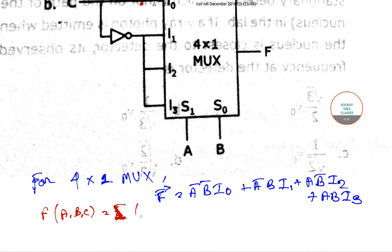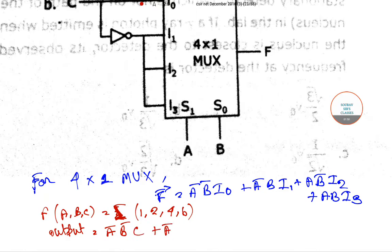Since f(a,b,c) equals summation over minterms 1, 2, 4, 6 as given in the question, the output equals a-bar b-bar c, plus a-bar b c-bar, plus a b-bar c-bar, plus a b c-bar.